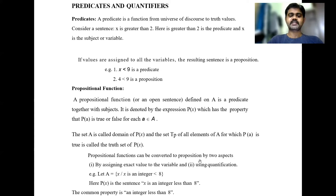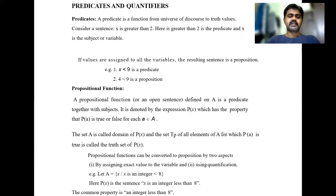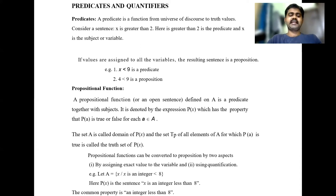Propositional functions can be converted to propositions in two ways: by assigning an exact value to the variable, and by using quantification. For example, let A equal the set of integers where x is an integer less than 8. Here p(x) is the sentence 'x is an integer less than 8'. The common property is 'integer less than 8' and x is the variable.